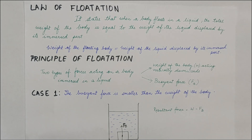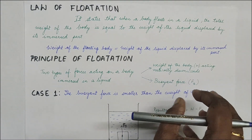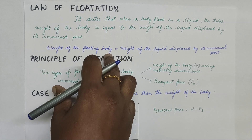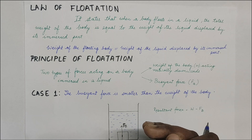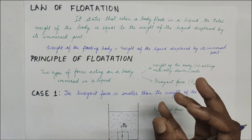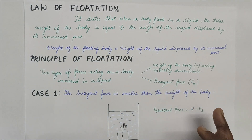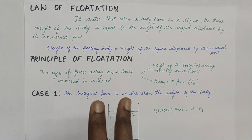Now we go to the next important part: understanding the law of floatation. It states that when a body floats in a liquid, the total weight of the body is equal to the weight of the liquid displaced by its immersed part — meaning how much liquid is displaced when we immerse that body equals the weight of the floating body. You can relate this to what we read earlier about density and the measuring cylinder experiment.